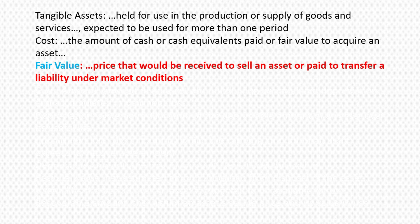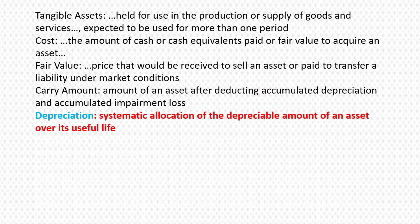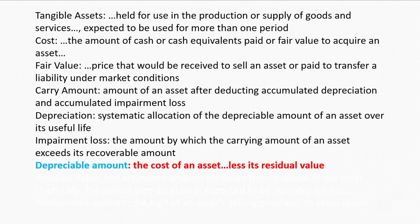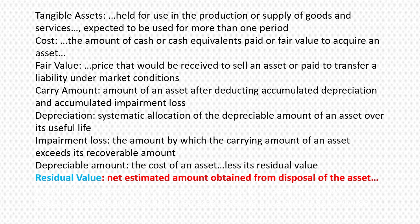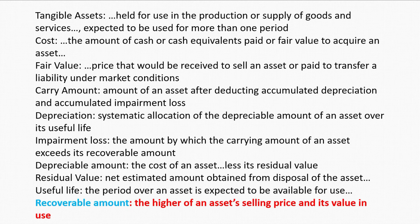Carrying amount means the value of an asset after deducting depreciation and impairment loss, where depreciation refers to the allocation of the depreciable amount of an asset over its useful life. Impairment loss means the difference between the asset's carrying amount and its recoverable amount. Depreciable amount means the cost of an asset minus its residual value, useful life means the period in which an asset can be used, and recoverable amount means the higher of selling price and value in use.